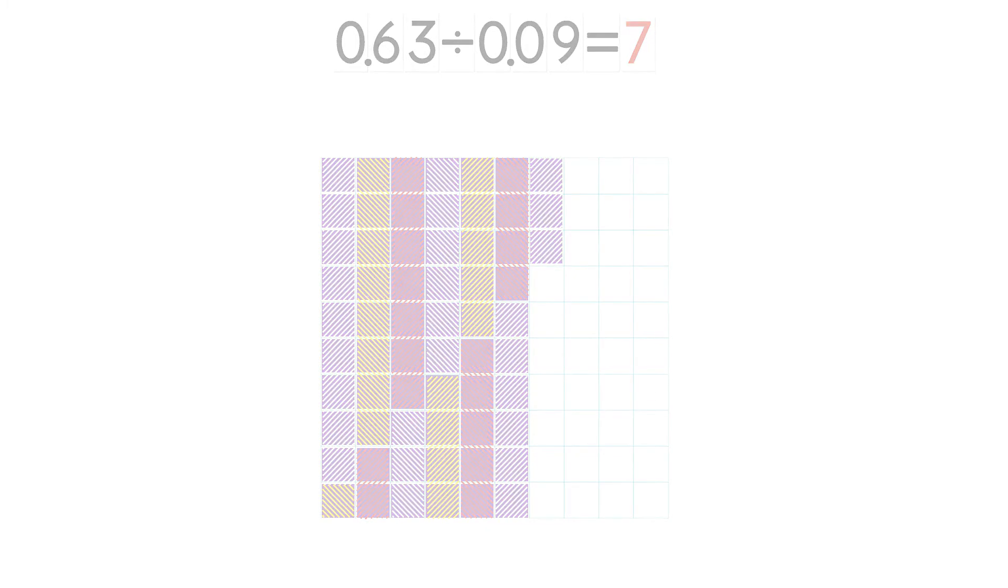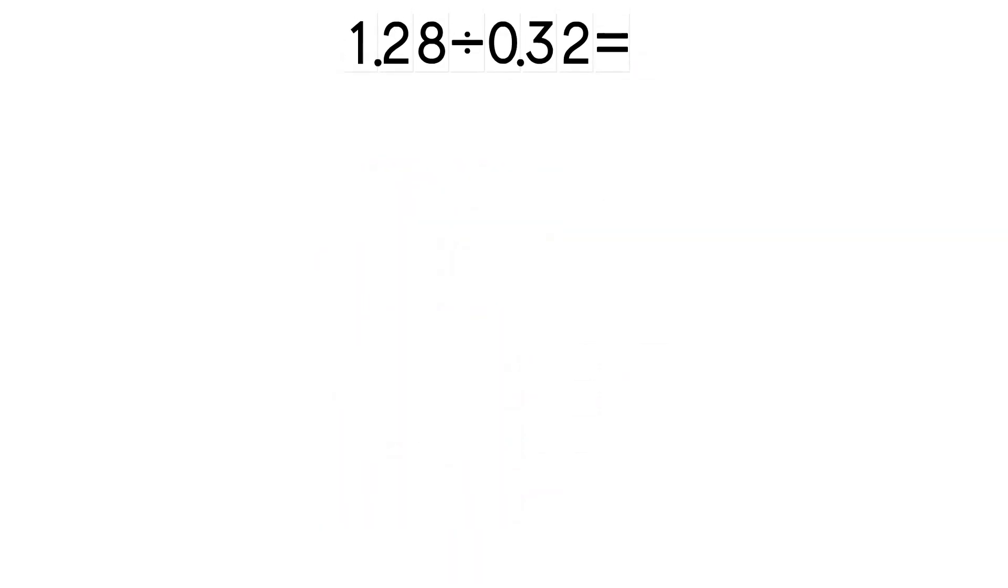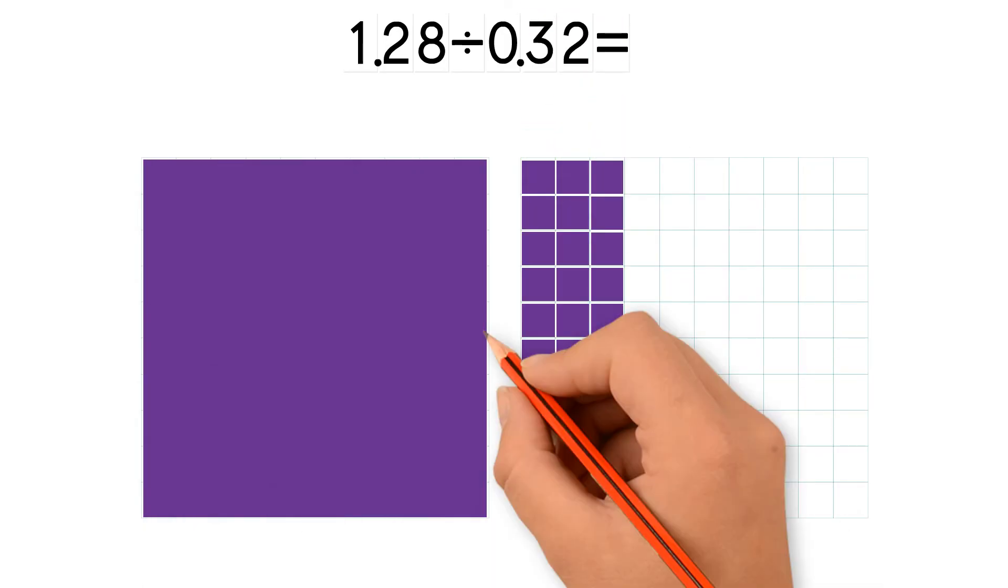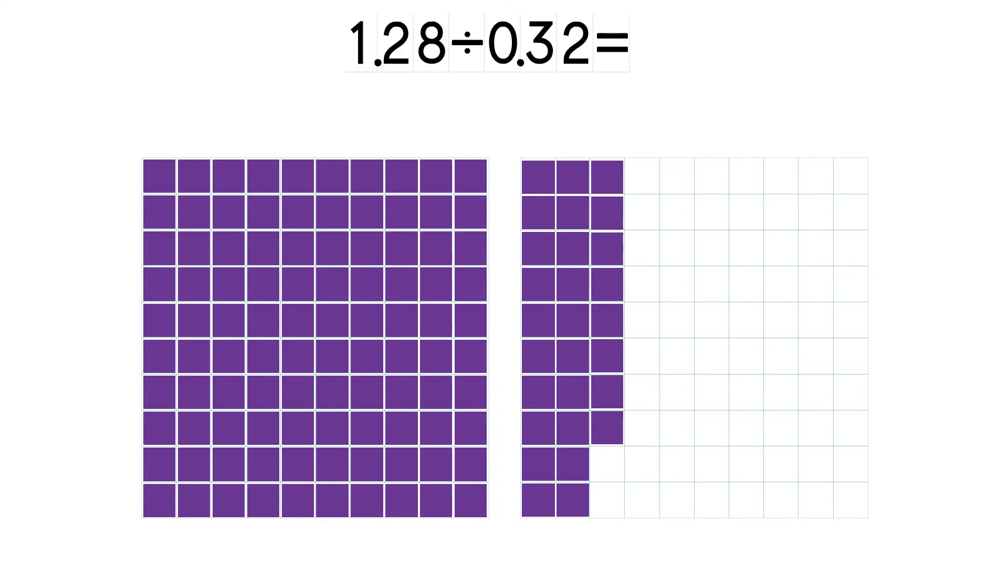Let's try another one. 1.28 divided by 0.32. Let's take a look at the dividend, 1.28. We have 1 whole and 28 hundredths. 1 whole is the same as 100 hundredths. So we have 128 hundredths in all.